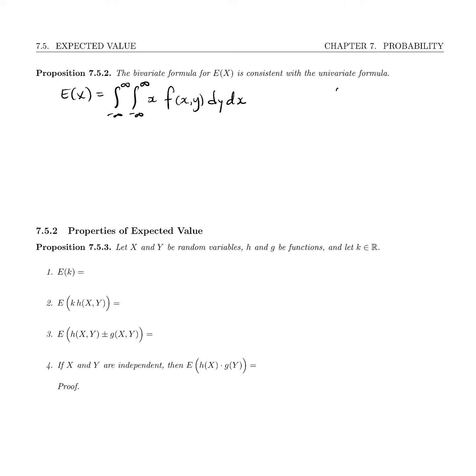And we wanted to compare that with the univariate formula E of x, which is the integral from minus infinity to infinity of x times the density function just for x. So how do we know that these two things are equivalent?